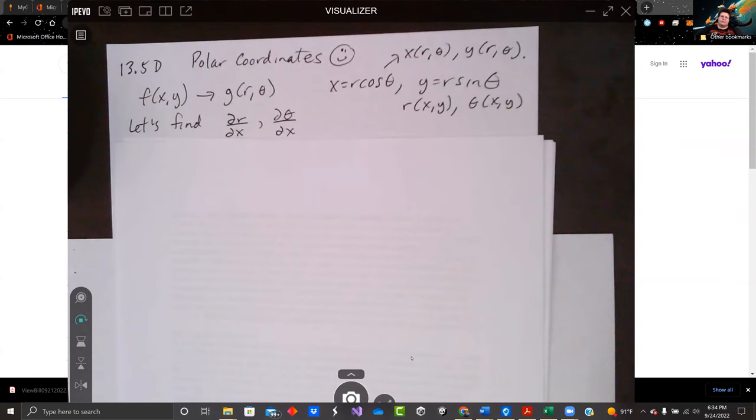Hey there, everybody. Welcome back. We are in 13.5 of Anton's 11th edition calculus book for early transcendentals. This is College of the Sequoias. This is the fall 2022 class for calculus 3.